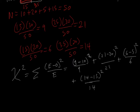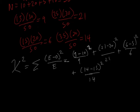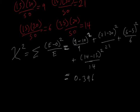So, 21 subtract 20 squared over 21 plus 6 subtract 5 squared over 6 plus 14 subtract 15 squared over 14. I went ahead and did this calculation separately. And what this calculation amounts to is 0.396. So, our chi-squared statistic is 0.396.